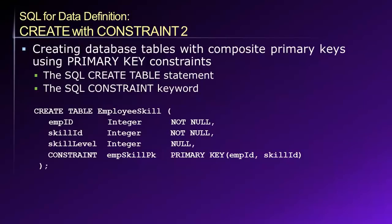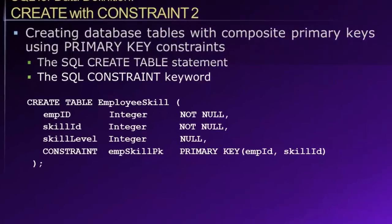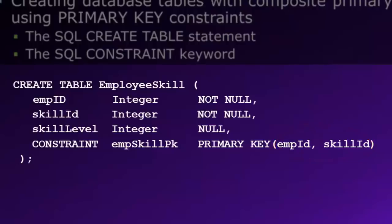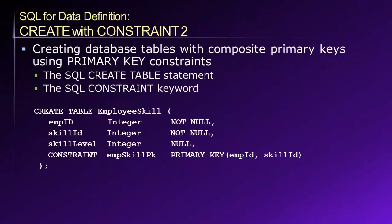Here we see a variation of creating a primary key where instead of a simple primary key, we want to create a composite primary key. In this case, the primary key consists of two attributes: employee ID and skill ID. To create the composite primary key, we simply separate these two attributes by a comma and place them both inside the PRIMARY KEY declaration.